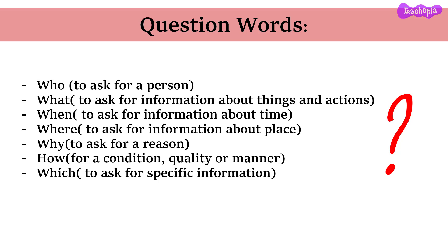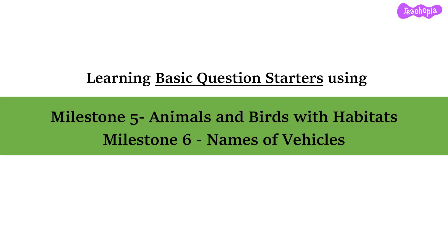We use 'who' to ask for a person. We use 'what' to ask for information about things and actions. We use 'when' to ask for information about time. We use 'where' to ask for information about place. We ask 'why' when we want to find out a reason. We begin with 'how' if we want to know the condition, quality or manner of something. And we use 'which' to ask for specific information. We will see how to create basic questions using these starters for Milestone 5, Animals and Birds with Habitats, and Milestone 6, Names of Vehicles.